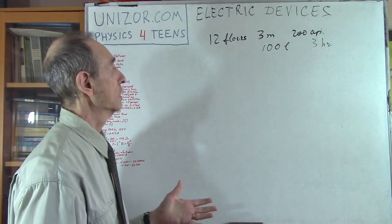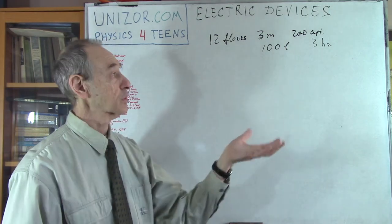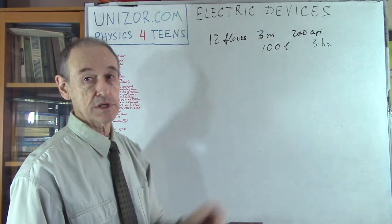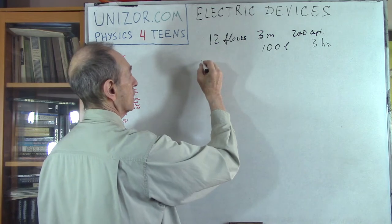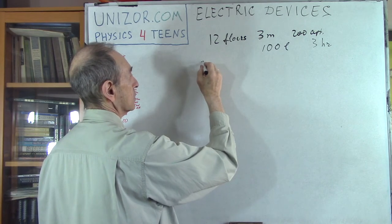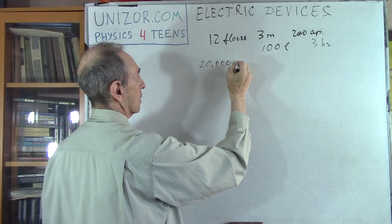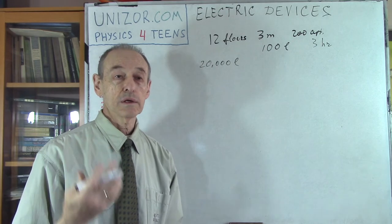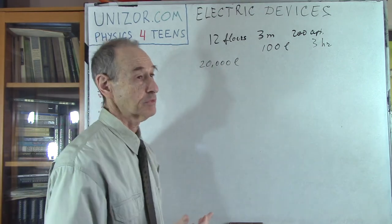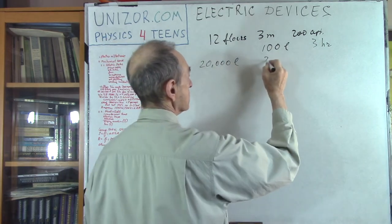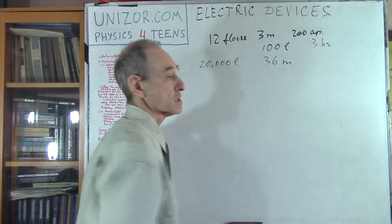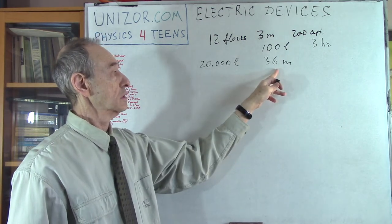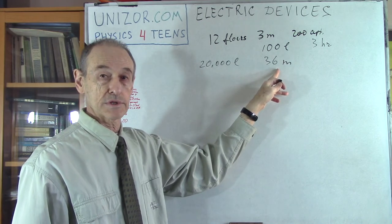And then we can divide it by time and calculate the power. Okay, so what is the amount of work? I'm lifting a certain amount of water. Now, what is the amount of water? Well, it's 200 apartments, 100 liters each. So the amount of water will be 20,000 liters. Now, to lift it to 12th floor, each floor is 3 meters, so it's 36 meters high. So I have to lift 20,000 liters of water by the height of 36 meters.